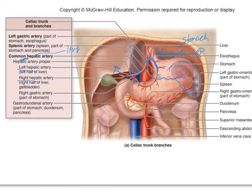You may be wondering where the right gastric is — the right gastric comes off right here and forms an anastomosis with the left. Don't worry about it; I'm not going to test you on that. Just know that the three branches of the celiac trunk are the left gastric, the common hepatic, and the splenic arteries. So that was the celiac trunk.